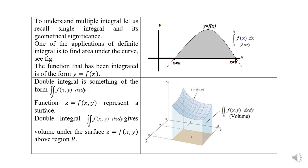This is a pictorial representation of the geometrical significance of double integration as well as single integration. The first picture is a single definite integration, which all of you are familiar with. If you have an integration of a function from a to b, where a and b are two points on the x-axis, then integration of this curve will give us the area under the curve from point a to b.